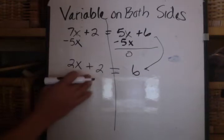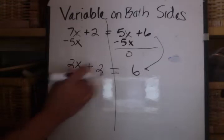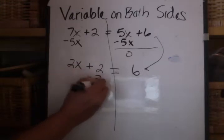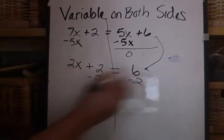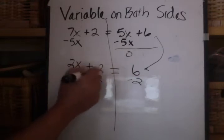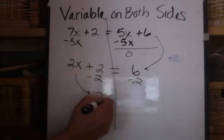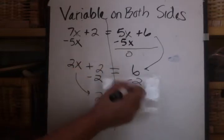Okay, and now the equation is something you're familiar with. I have a plus 2 here. I want to do the inverse operation. So, I subtract 2 from both sides. This becomes 0, and I bring down 2x equals 6 minus 2 is 4.